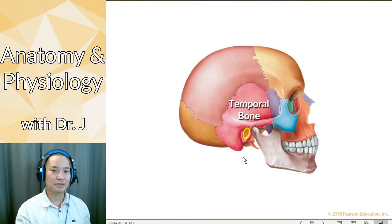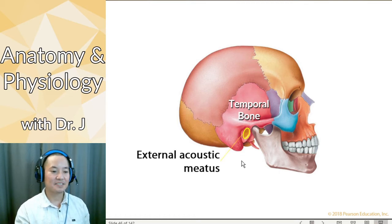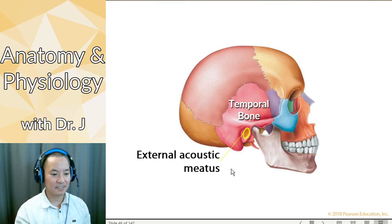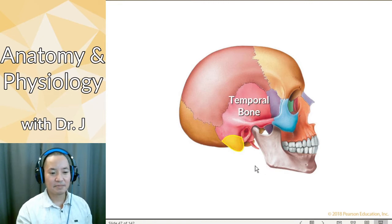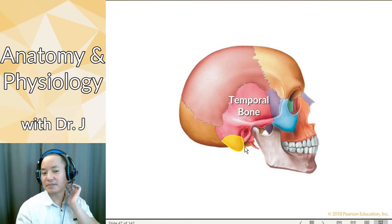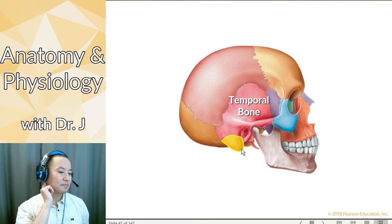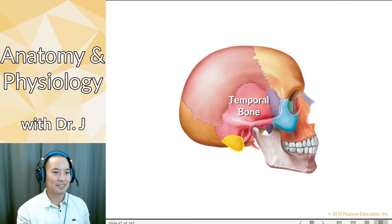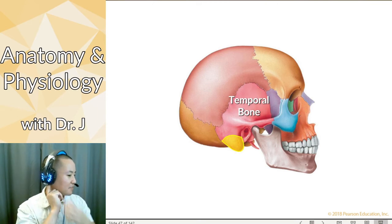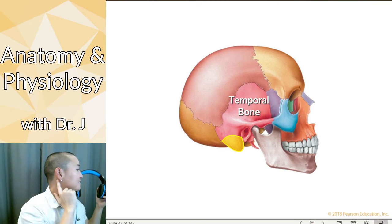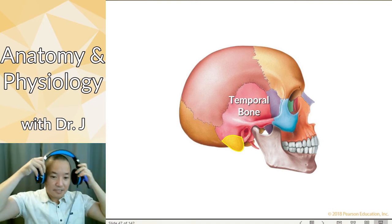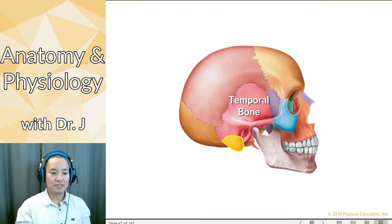In the temporal bone, there's that passageway we talked about — the external acoustic meatus — which allows vibrations and air to travel from the external ear and vibrate your tympanic membrane inside your skull. And then there's something you can actually feel. Try feeling behind your ear — you might be able to feel a little smooth bump back there. This is one of the hardest things about teaching online; it's easier to show in person.